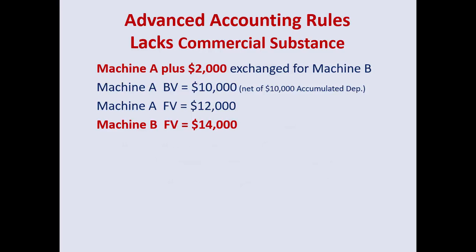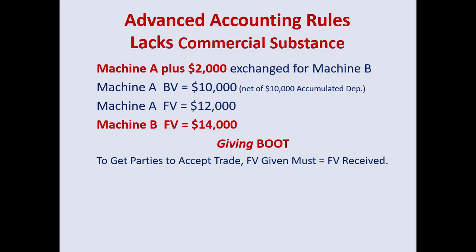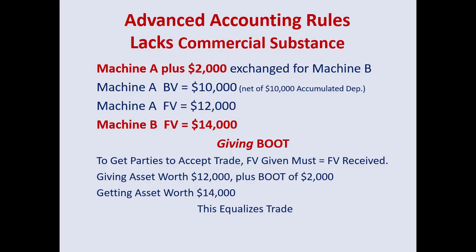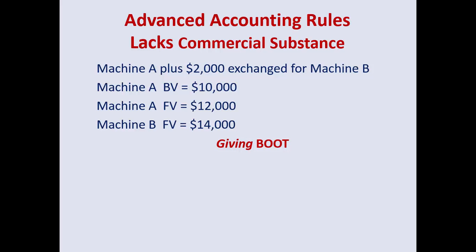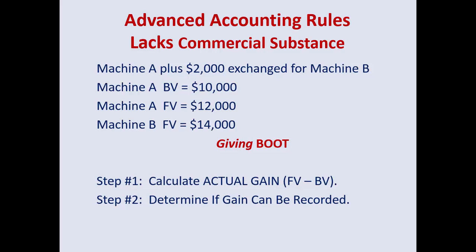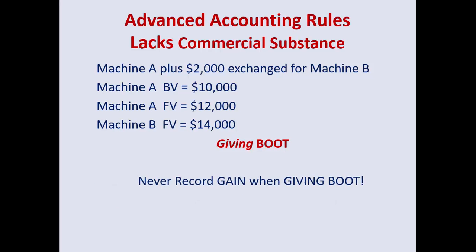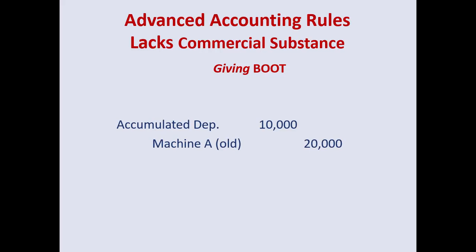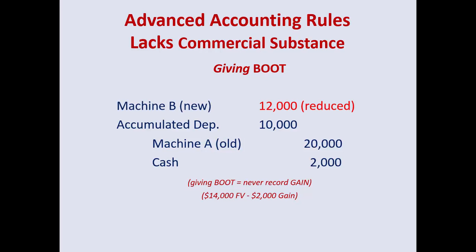Now we look at where you're paying boot instead of receiving it. Fair value given must equal fair value received. You're giving up Machine A valued at $12,000 and getting Machine B valued at $14,000, so you must pay $2,000 cash — similar to trading in a car and paying more. Step one: calculate the actual gain and determine if it can be recorded at all. Never record a gain when giving boot. In the journal entry, take the old asset off the books, record the cash going out. The new Machine B is worth $14,000, but the $2,000 gain cannot be recorded — it must be absorbed into Machine B's book value on the books.